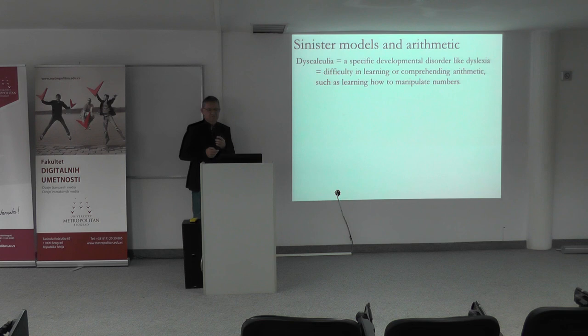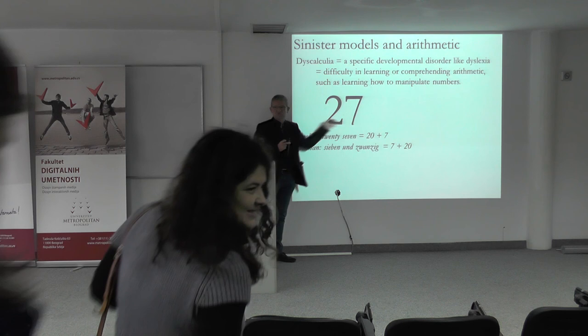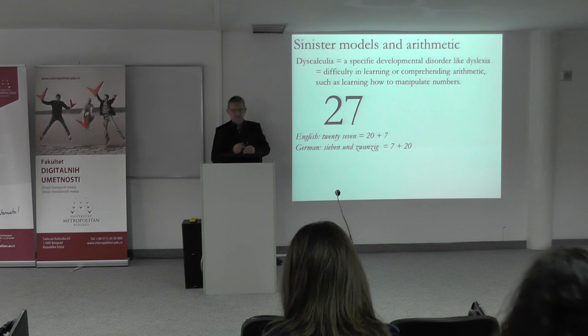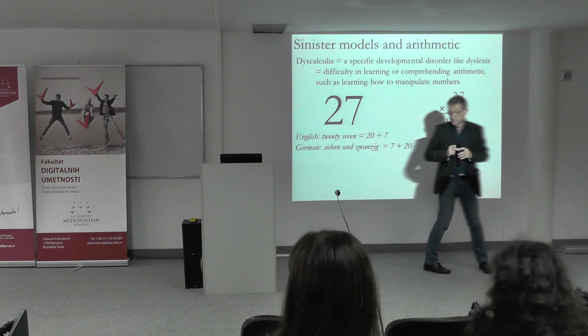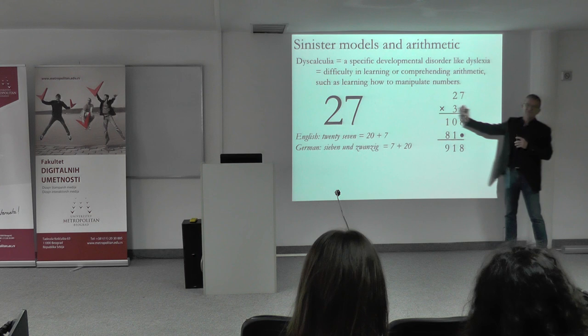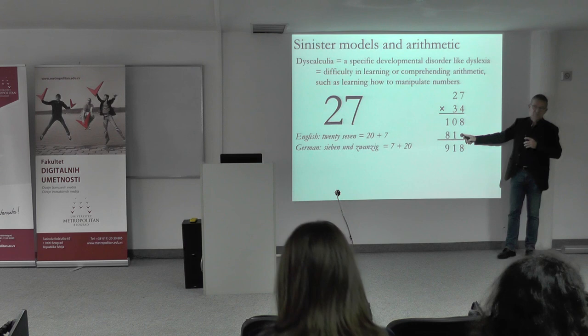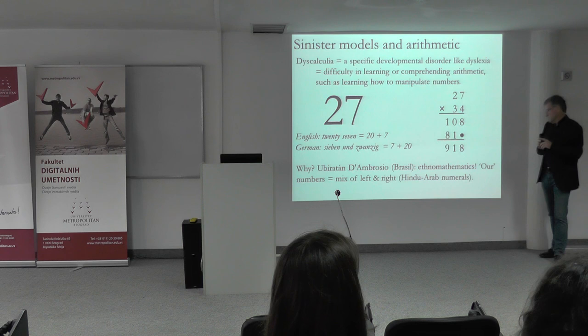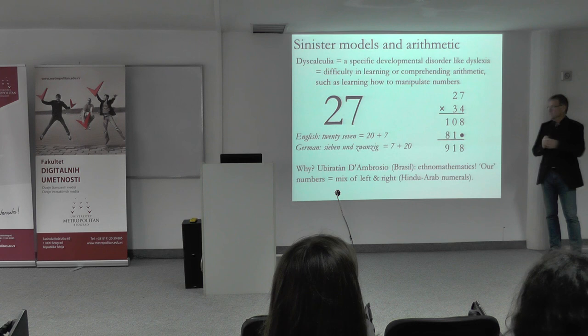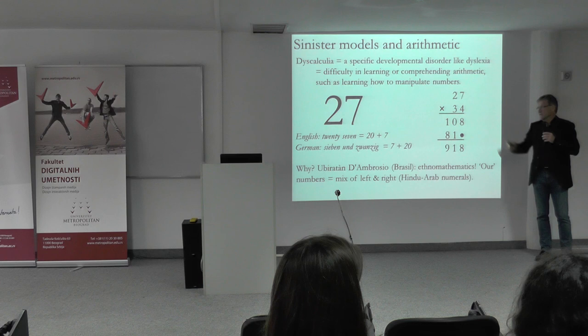There's also a problem for mathematics education. For instance, 27 — we say twenty-seven in English, but in German you say it reversed, you turn it like a mirror image. When you have to make additions and work with these numbers, it's pretty difficult. Actually, when you do a multiplication, independent of language, you will always write it from right to left — this is actually an Arab heritage. You even use a dot to symbolize that you have to move like this. Humberto D'Ambrosio said that there's a mix of left and right in our numbers, and we do not always realize it.